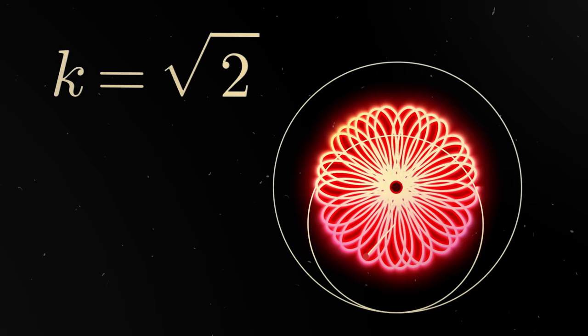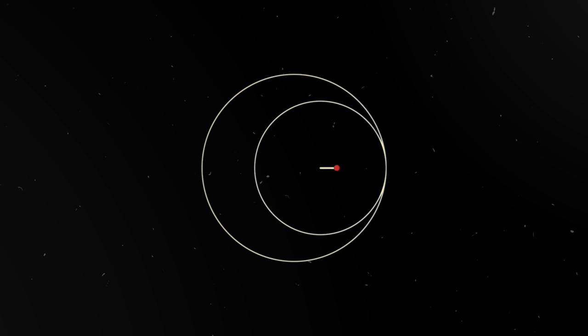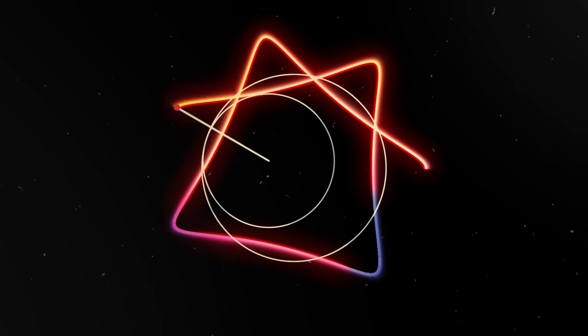Besides changing the K parameter, I can also change the position of the drawing point. But unlike the toy, the program allows me to do impossible things. For example, I can place the drawing point outside the wheel and get pictures that cannot be drawn with the spirograph.